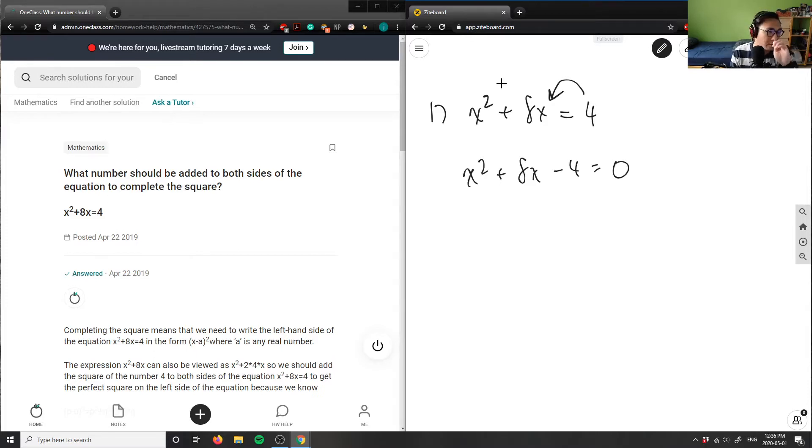In order to complete the square, I'm going to take this b term, divide it by 2, and square it. That's going to make my perfect square trinomial.